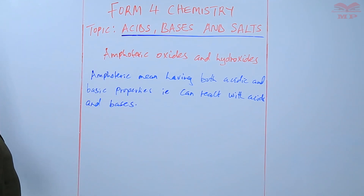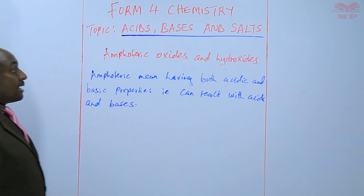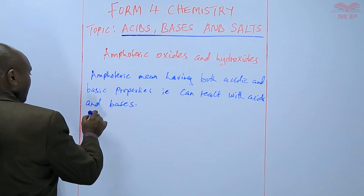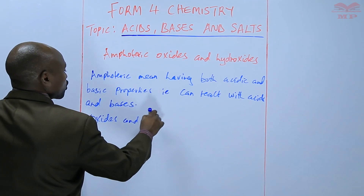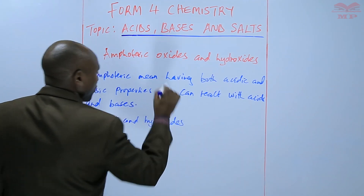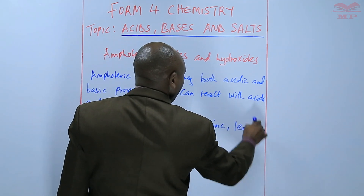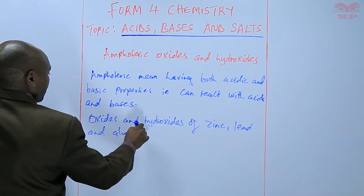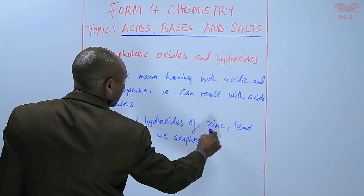We have examples of metal oxides and hydroxides that are amphoteric. The oxides and hydroxides of zinc, lead, and aluminium are amphoteric.